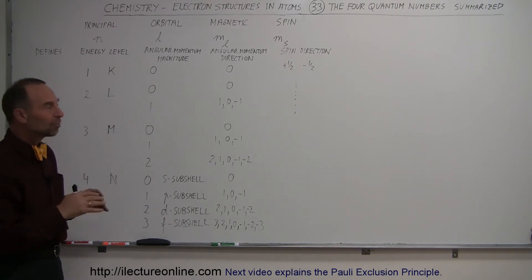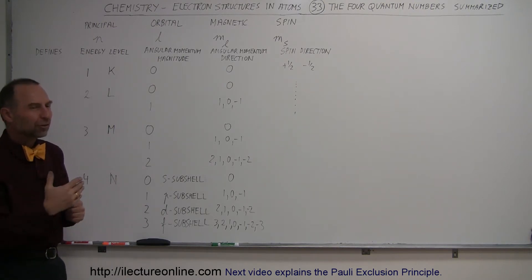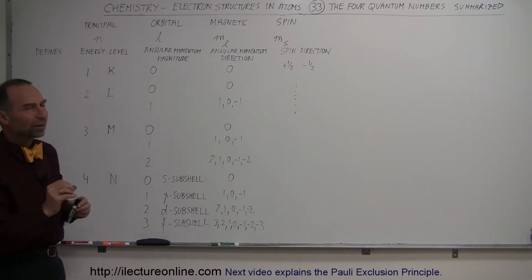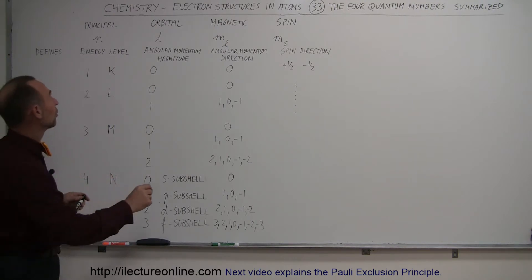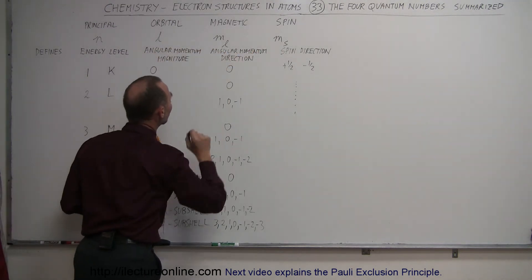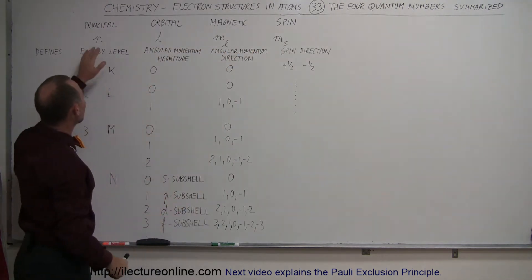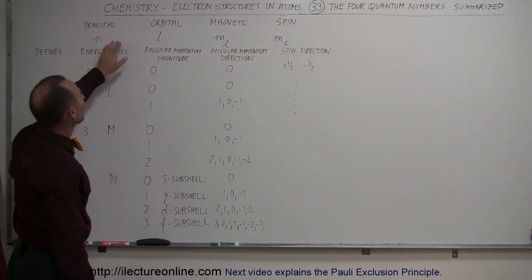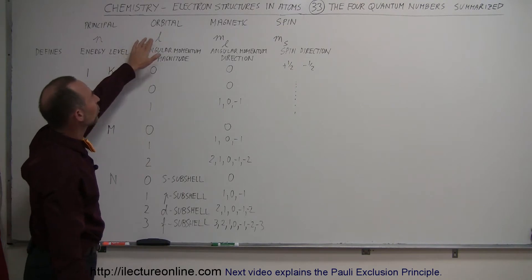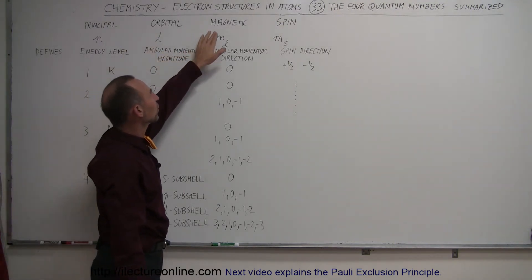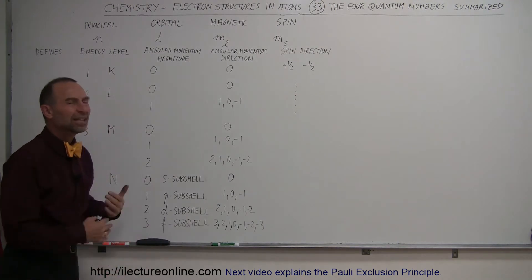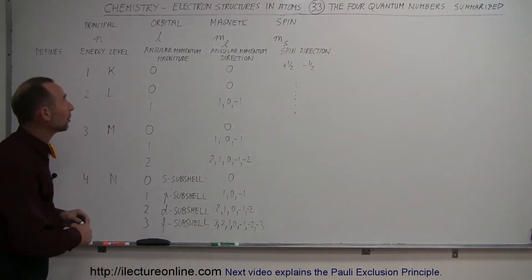The shapes of the orbitals, the energy levels and so forth are defined by what we call four quantum numbers. We have N, L, M sub L, and M sub S. N being the principal quantum number, L being the orbital quantum number, M sub L being the magnetic quantum number, and M sub S being the spin quantum number. That's the easiest way to remember them.